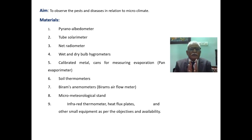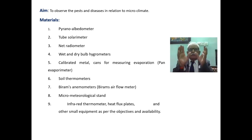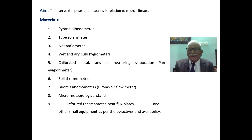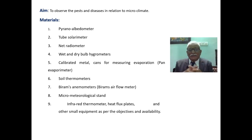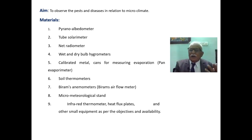What we require: simple pyranometer, solar meter, net radiometer, wet and dry hydrometer, wet and dry thermometers. When wet and dry thermometers are mounted on a wooden platform, we can use it as a psychrometer or hydrometer. Also calibrated metal cans, soil thermometers, anemometers, and micrometers. This is very interesting — how to develop a micrometeorology class. From my own experience for my MSc and PhD experiments: my MSc was on wheat at Punjab Agricultural University, Ludhiana, in the early 1980s, and my PhD experiment involved infrared thermometers, heat flux plates, and other equipment.